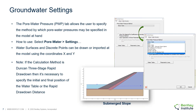The Pore Pressure tab allows the user to specify the method by which pore water pressures may be specified in the model. The pore water pressure dialog may be found under the Pore Water Settings menu option. There are different methods to specify the pore water pressures in the model. These methods are considered global settings which apply to all or selected regions in the entire model. Additional functionalities allow combining global settings with the effect of B-Bar or substituting the application of RU on individual material regions. Water surface and discrete points can be drawn or imported using coordinates X and Y.